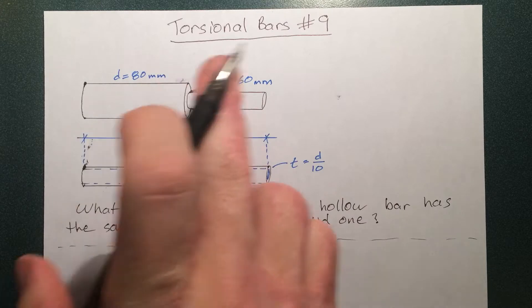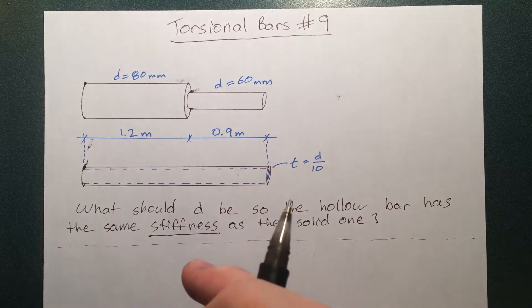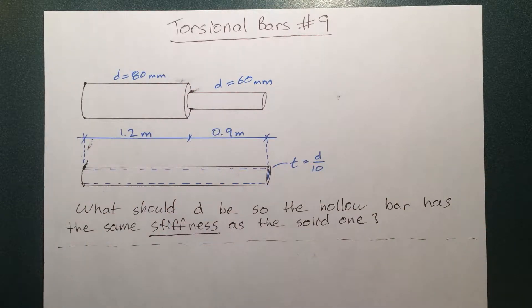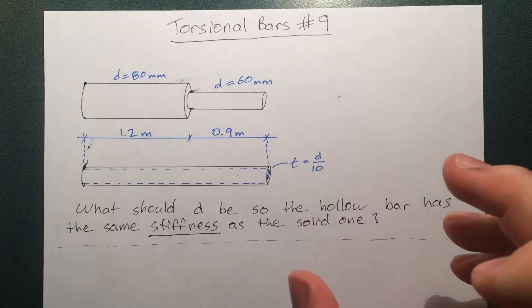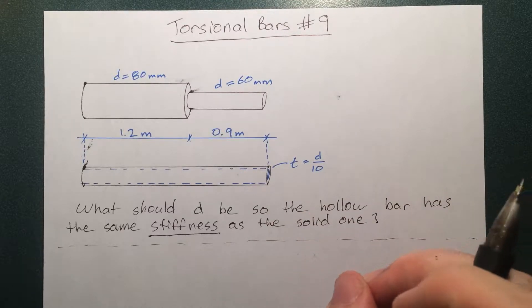If we put this on the torsion, the torsional bar, if we twist it, it's the only sort of stiffness. You can imagine one bar will twist easy, another bar will twist quite hard, and that has to do with torsional stiffness.